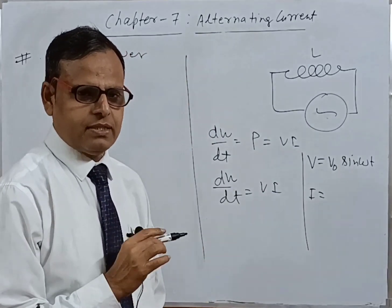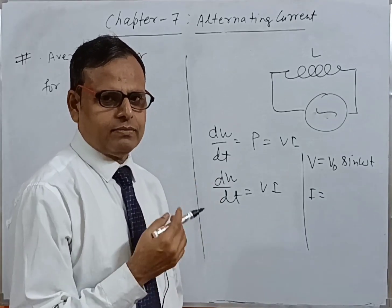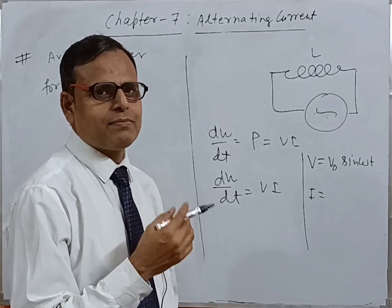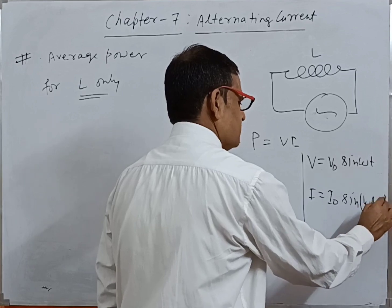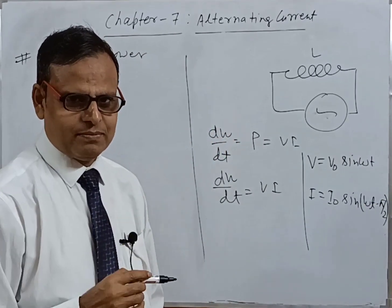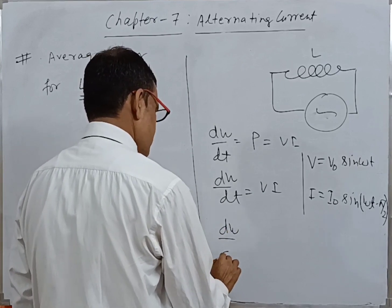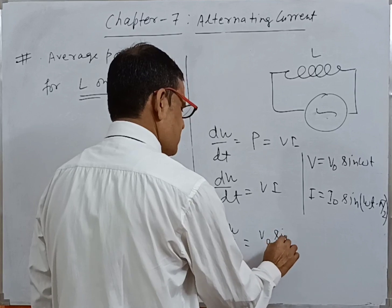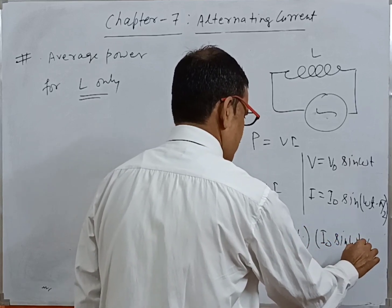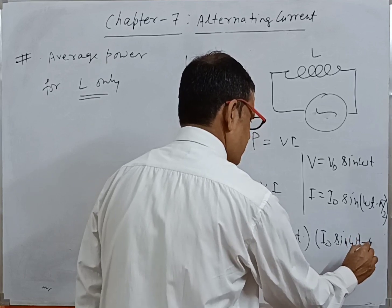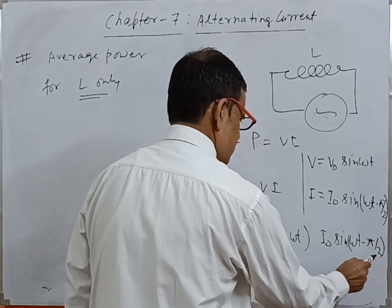When there is L only in the AC circuit, then current is behind by π/2. Means current lags by π/2 in phase: I = I₀ sin(ωt − π/2). This is the concept in L only. So now we can put the formula: dW/dt = V₀ sin(ωt) × I₀ sin(ωt − π/2). This is the value of I, and this is the value of V.